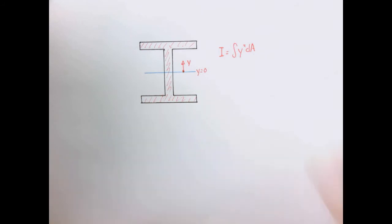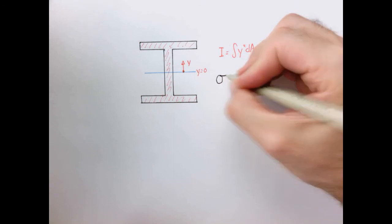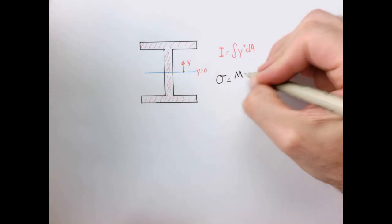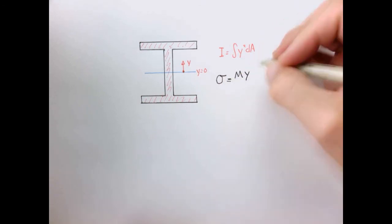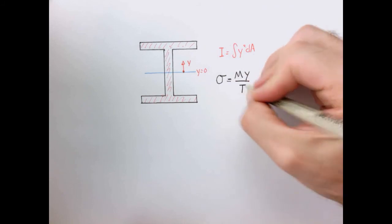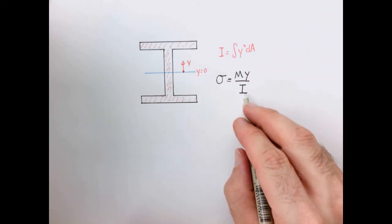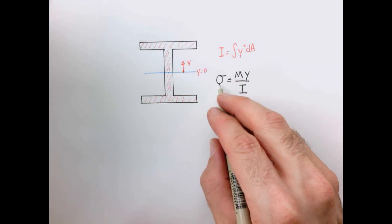And if you recall, the maximum stress in bending is given by our formula M, which is the moment, y, which is the distance to the neutral axis, divided by our moment of inertia. So the higher the moment of inertia, the lower the stress.